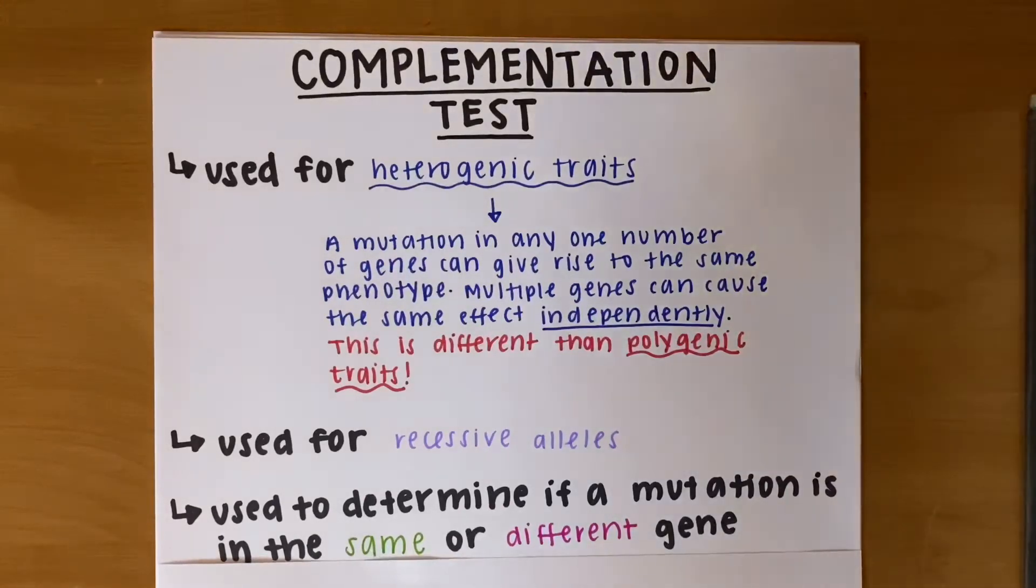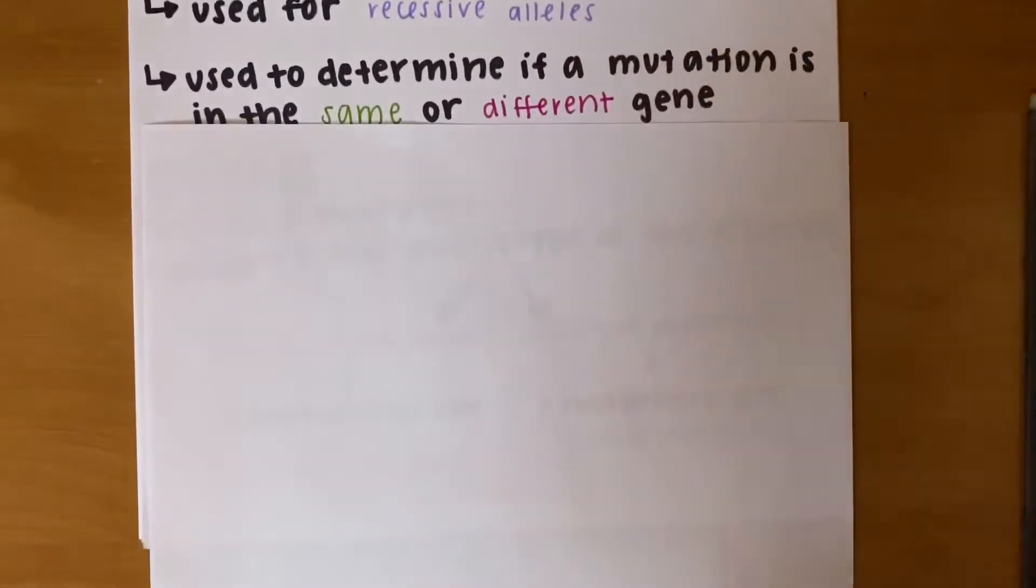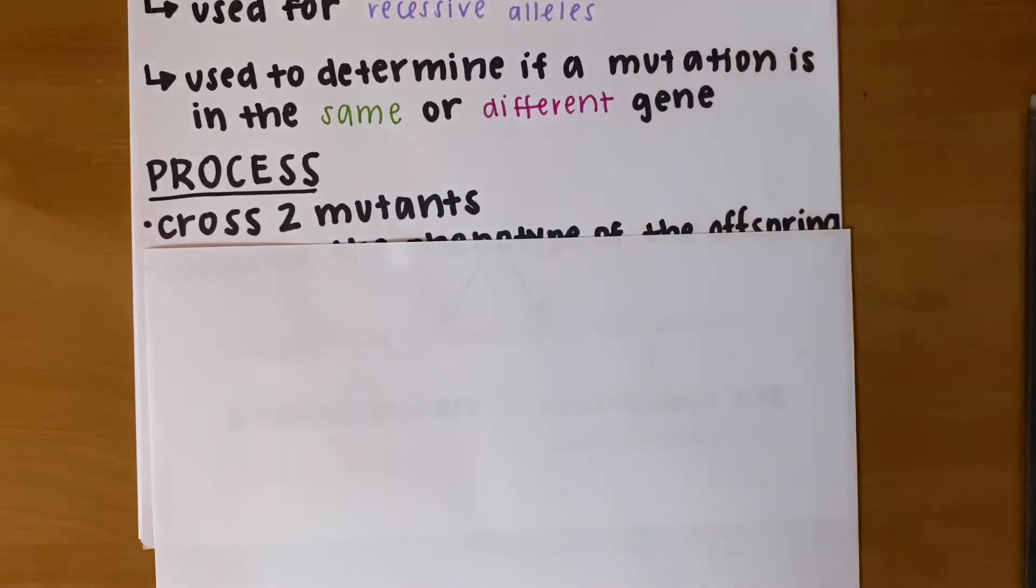We do this by observing phenotypes. The steps of a complementation test are pretty simple. First, you take two organisms that show the same mutant phenotype and then you cross them.